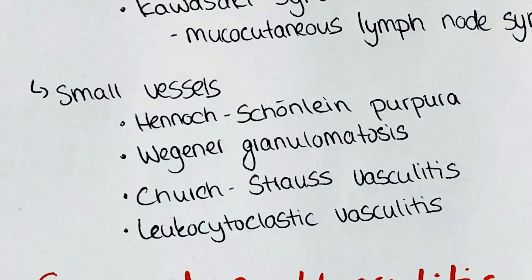Wegener granulomatosis is also called granulomatosis with polyangiitis. It is a rheumatic disease that presents with granulomatous changes in the airways and medium-sized and small blood vessels. The causative agent is unclear but it is thought to be associated with a chronic infection with Staphylococcus aureus.